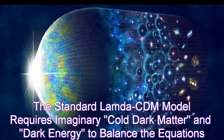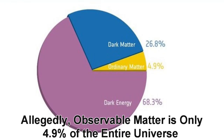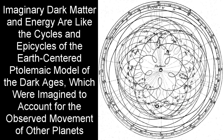The standard Lambda CDM model requires imaginary cold dark matter and dark energy to balance the equations. Allegedly, observable matter is only 4.9% of the entire universe. Imaginary dark matter and energy are like the cycles and epicycles of the Earth-centered Ptolemaic model of the Dark Ages, which were imagined to account for the observed movement of other planets.